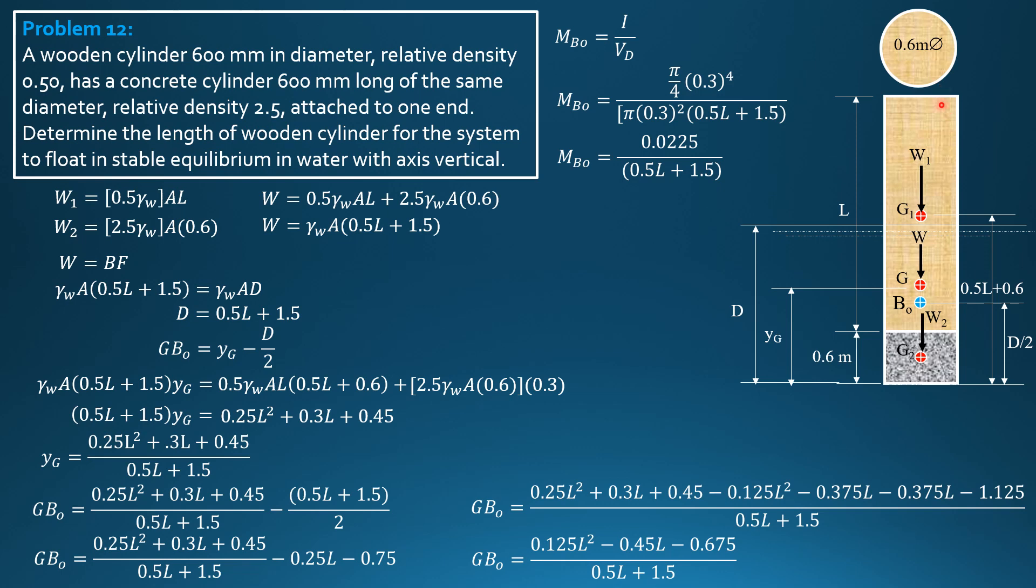For this system to just float upright or in stable equilibrium or axis vertical, Mg must be 0 or greater equal to 0, just about 0 for it to be stable. Equating, that means MbO minus GbO equals 0 or MbO equals GbO.